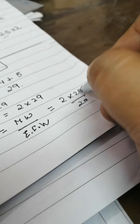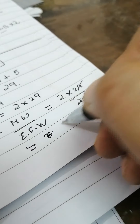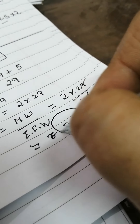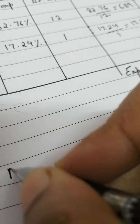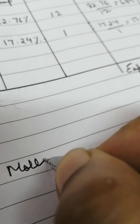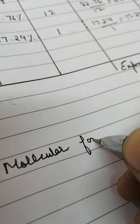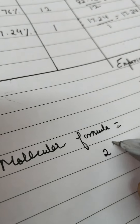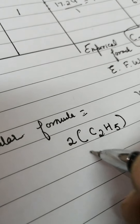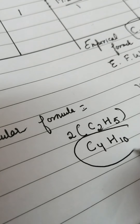So N equals 2 × 29 divided by 29. The 29s cancel, and the value of N comes out to be 2. Therefore, the molecular formula is N × C2H5 = 2 × C2H5, which gives C4H10. This is your answer.